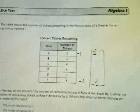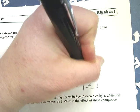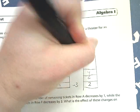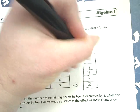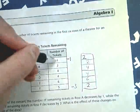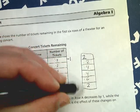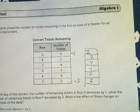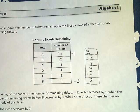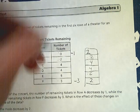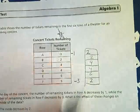What is the effect of these changes on the mode? Now, anything that didn't change, I just need to rewrite: 1, 2, A, B, C, D, E, F. Row A decreases by 1. The number of tickets in row F decreases by 3. So both of those are represented. This is my original set, and this is my new set.